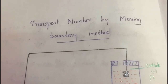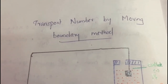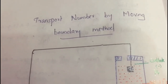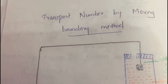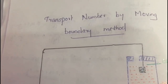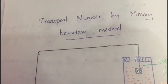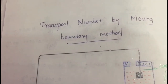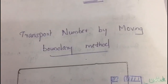On account of simplicity and accuracy, moving boundary method is used for determining transport number measurements. This method depends upon the direct observation of migration of ions in an electric field. Now we will discuss the apparatus used in moving boundary method.